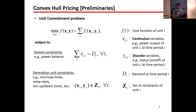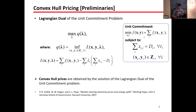I'll start with the unit commitment problem, where we minimize the cost. f(x,y) is the cost function of a generation unit — x are the continuous variables and y are the discrete variables, i.e., the on/off decisions. Subject to satisfying the demand, we have linear constraints: power balance, reserve constraints, transmission constraints, and generation unit constraints. One way to compute convex hull prices is by formulating the Lagrangian dual: we dualize the system constraints, take the dual function — minimizing the Lagrangian and then maximizing over lambda. The lambdas we derive are the convex hull prices.